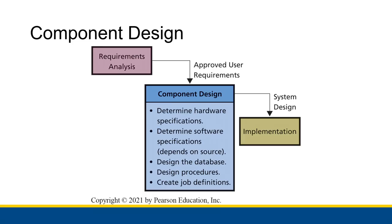That's the component design. Once we finish this piece, we know exactly what we need from each component of the information system — what pieces we're going to create ourselves and what pieces we're going to grab from elsewhere. We'll be able to actually get started building the system, which is the next phase. We finish component design with the full design of the system that is ready to go into production.